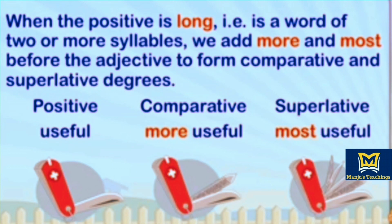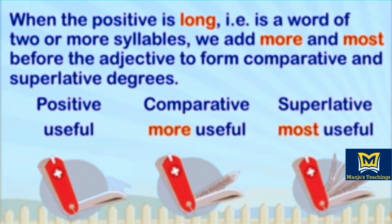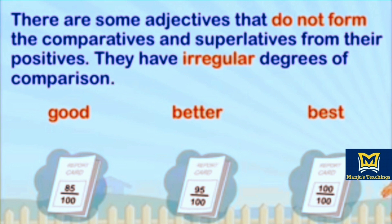When the positive is long — that is, a word of two or more syllables — we add 'more' and 'most' before the adjective to form comparative and superlative degrees. Example: useful, more useful, most useful.